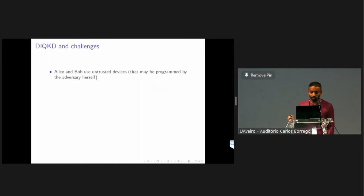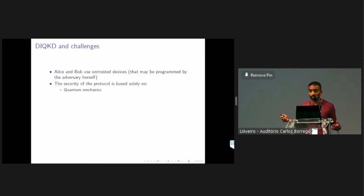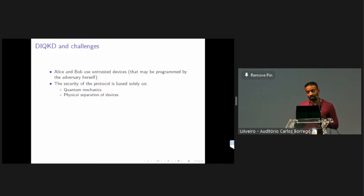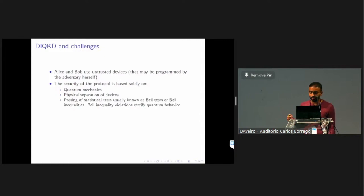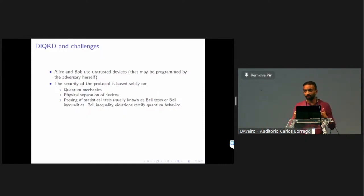In device independence, Alice and Bob don't trust their devices — it's possible that the adversary actually programmed the devices herself. The security of the protocol is based only on the correctness of quantum mechanics, the physical separation of devices, which enforces the non-signaling condition, and passing of statistical tests known as Bell tests or Bell inequalities. These help establish the separation between classical and quantum: if there is a violation of the Bell inequality, then we know that something quantum is going on.